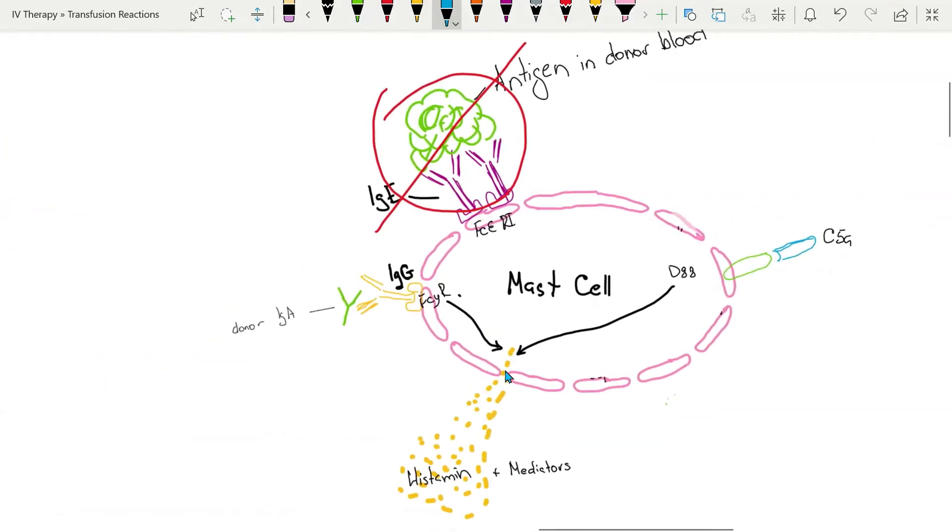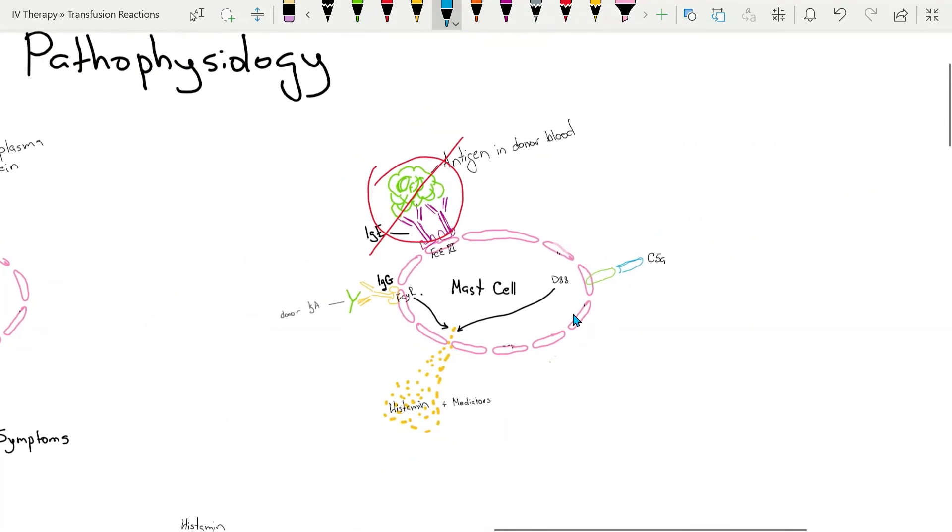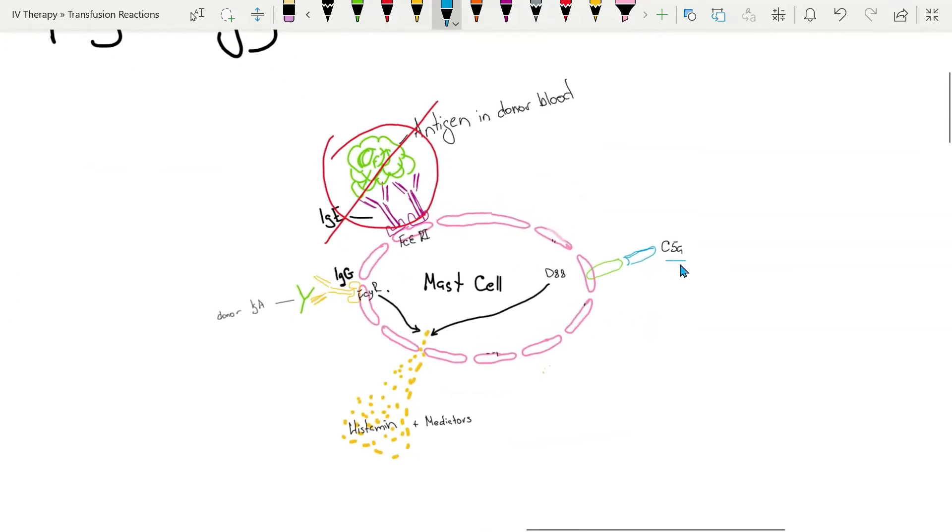Anaphylactic reactions present with severe signs and symptoms due to activation of C3A and C5A and immunoglobulin A antibodies that bound to immunoglobulin G and then bound to the receptor in the mast cell.